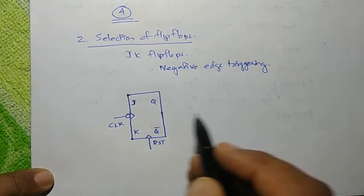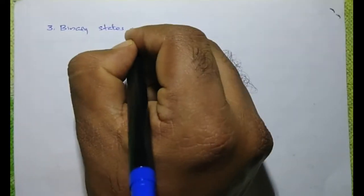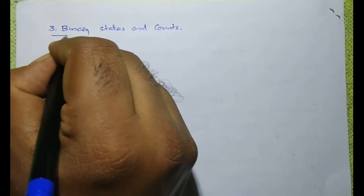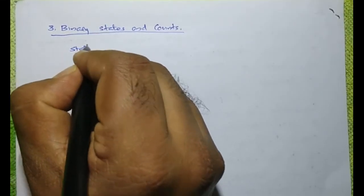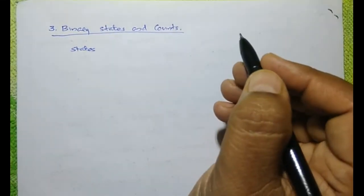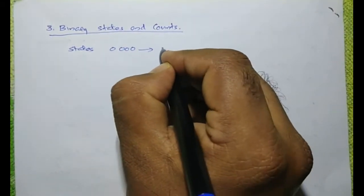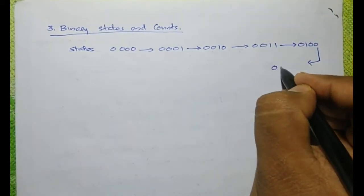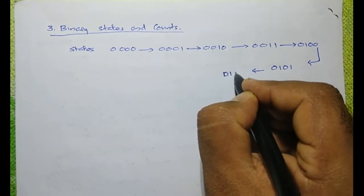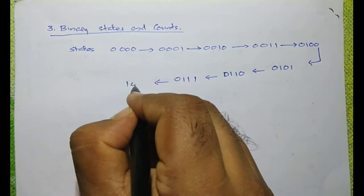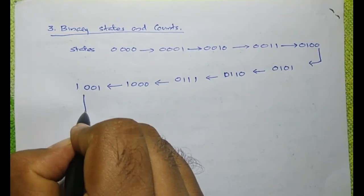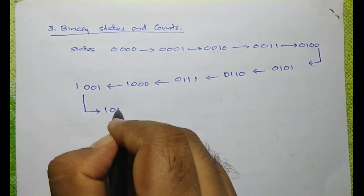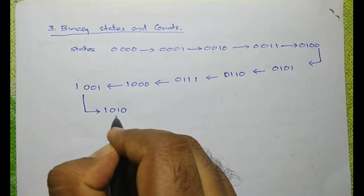This is a negative edge-triggered JK flip-flop. The states through which the counter passes before it resets are represented starting from 0000. The next state after the 10th count is 1010, which is the 11th state and should not be there.